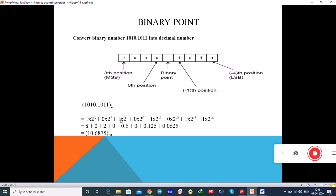If you calculate, this is 8 and this is 2 and 2 power minus is 1 by 2.5 and its value is 0.125 and 1 by 2 power 4 is 0.0625. If you add this, you will get 10.6875 base 10. That is, you have converted this binary number to the decimal number. This is how you convert the normal binary number or the pointed binary number.